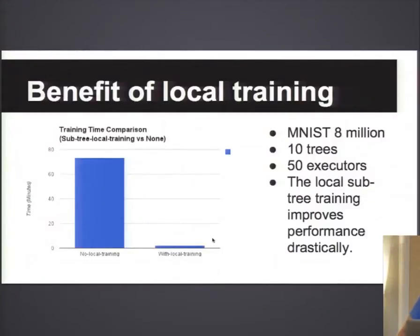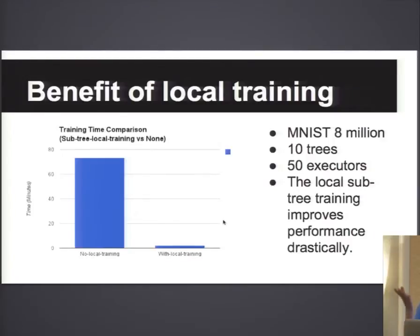I showed you distributed node splitting, but we can also do local subtree training. This graph shows the benefit: without any local subtree training, training 10 trees on the MNIST dataset takes almost 70 minutes. But as soon as we added local subtree training, the whole thing finished in about 2.7 minutes. That's a pretty incredible, drastic improvement.